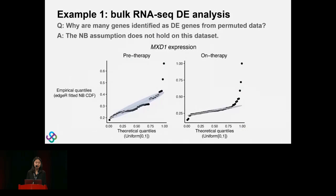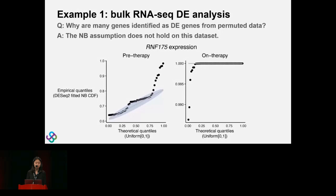The reason is that on these patient data the negative binomial assumption does not hold well. Showing one gene's expression levels in a quantile-quantile plot — comparing two distributions where the x-axis shows theoretical quantiles of the CDF assuming a fitted negative binomial — the dots should lie on the diagonal line in the ideal case, but we see outliers. For the second group this violation is more severe, and for DESeq2's fitted negative binomial we see an even more severe violation of the model assumption.